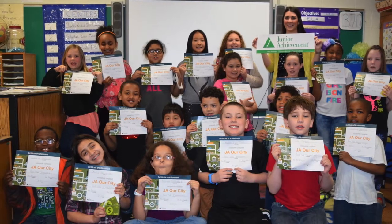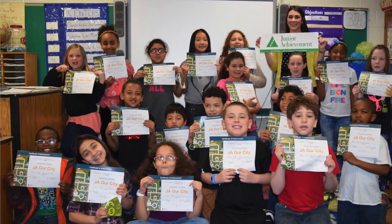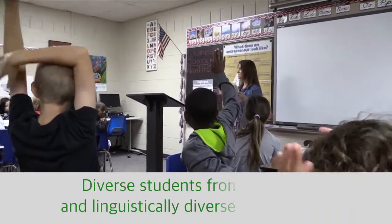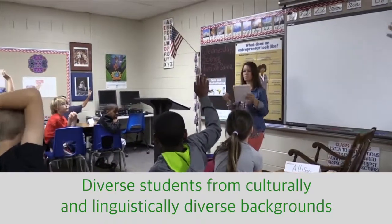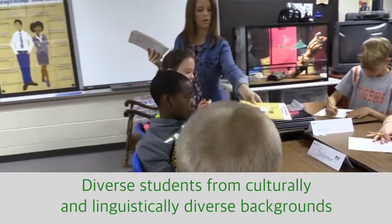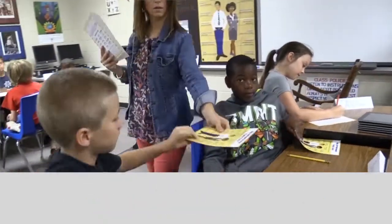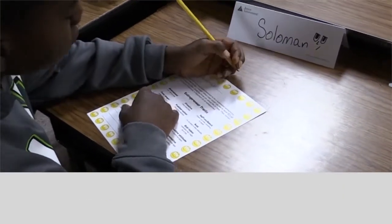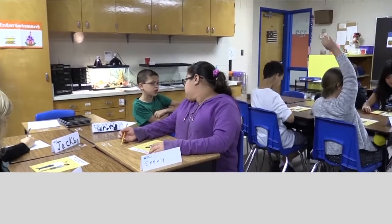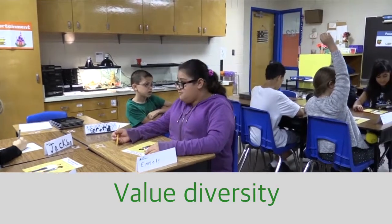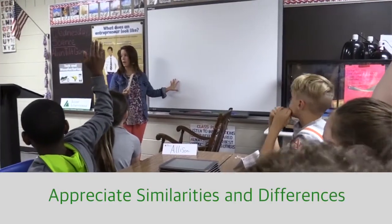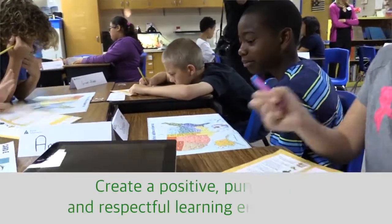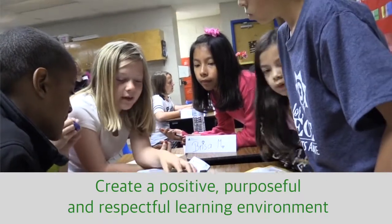Every class is different, but the teacher will be there to assist you. As a Junior Achievement volunteer, you're likely to be working with diverse students from culturally and linguistically diverse backgrounds to various types and levels of learning styles. In every classroom, the learning levels of students can be varied. To connect with all types of learners, it's important to demonstrate that you value diversity and appreciate the similarities and differences that exist among the students. This creates a positive, purposeful, and respectful learning environment for everyone.